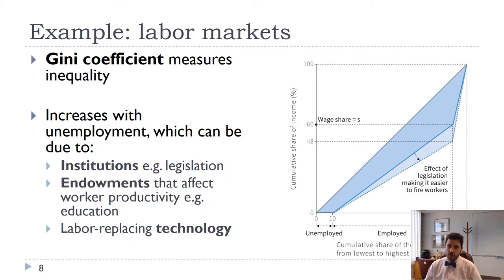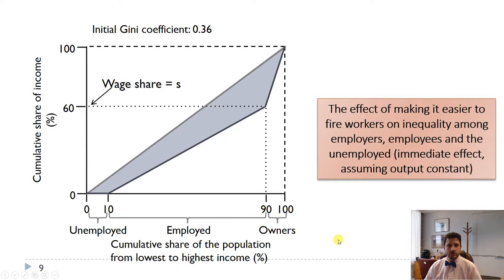Not everybody has the same income, so we measure the Gini coefficient as the area between the 45-degree line and the Lorenz curve, divided by the entire triangle under the 45-degree line. We'll look at how different institutions, endowments, technologies, and levels of education can affect inequality.